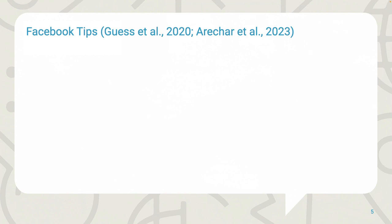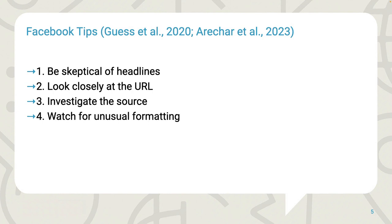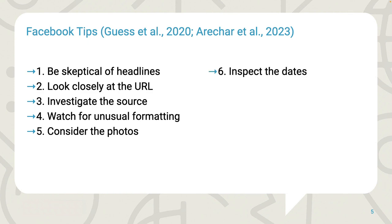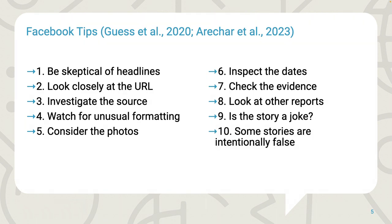The Facebook tips include the following instructions and questions: 1. Be skeptical of headlines. 2. Look closely at the URL. 3. Investigate the source. 4. Watch for unusual formatting. 5. Consider the photos. 6. Inspect the dates. 7. Check the evidence. 8. Look at other reports. 9. Is the story a joke? 10. Some stories are intentionally false.